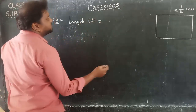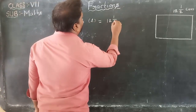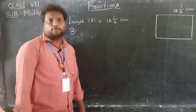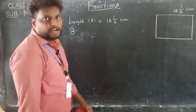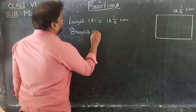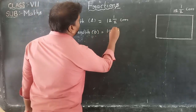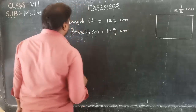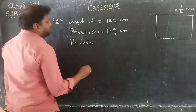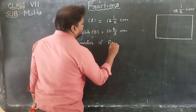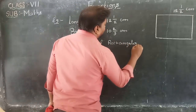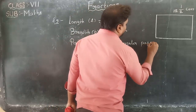First of all, write: Length L is equal to 12 and 1/2 cm. And breadth — 'long' and 'length' are equal terms, and 'wide', 'width', or 'breadth' are all equal. Breadth B is equal to 10 and 2/3 cm. Perimeter of rectangular paper.